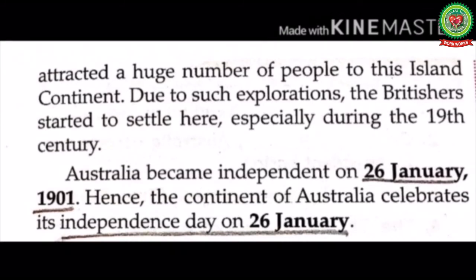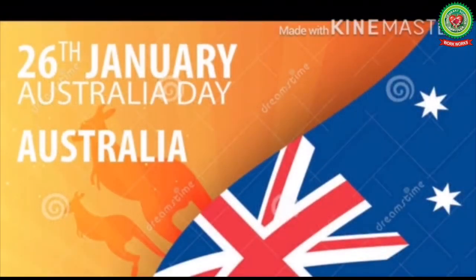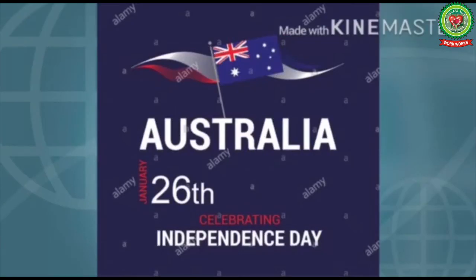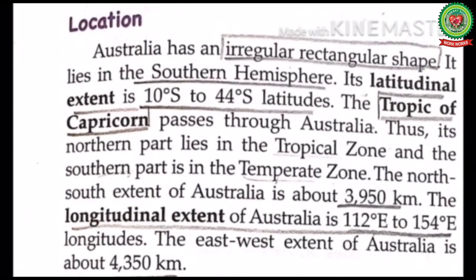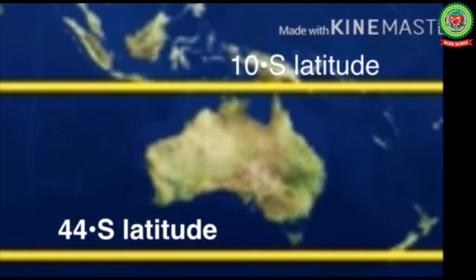The discovery of gold and diamond mines attracted a huge number of people to this island continent. Due to such explorations, the British started to settle here, especially during the 19th century. Australia became independent on 26 January 1901, and hence celebrates its independence day on that date.